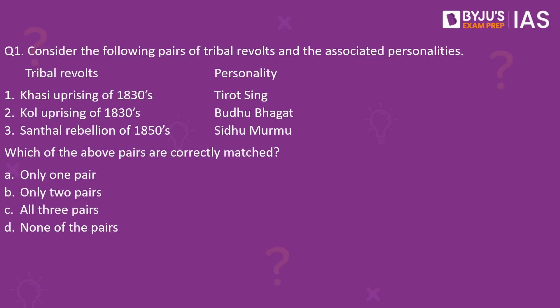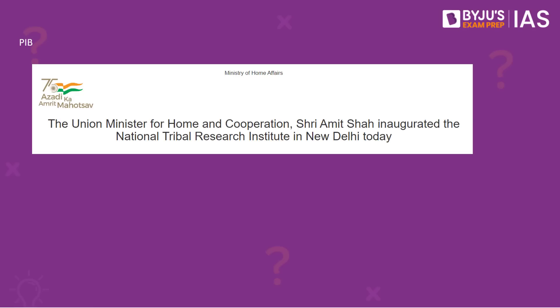Beginning with the first question of the day: Consider the following pairs of tribal revolts and the associated personalities. There are three pairs given here — Khasi Uprising of 1830s with Tirod Singh; Khol Uprising of 1830s with Budhu Bhagat; Santal Rebellion of 1850s with Siddhu Murmu. Which of the above pairs are correctly matched? The context is a PIB article noting the inauguration of the National Tribal Research Institute in New Delhi, where the Union Minister announced the Adivasi Tribal Pride Day and reminisced about tribal leaders' contributions against British imperialism.